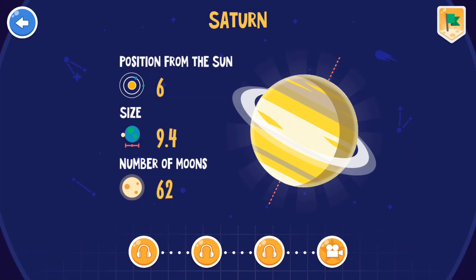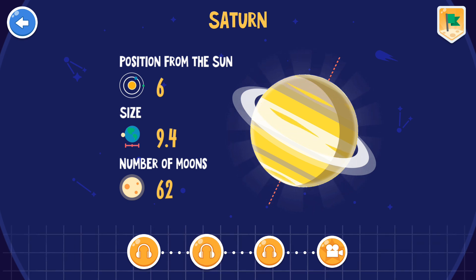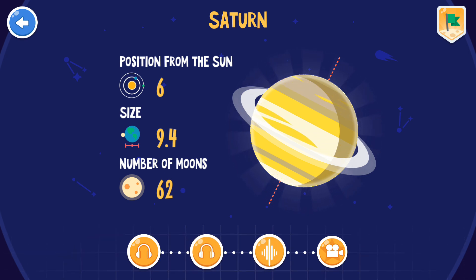There is a gigantic cloud hexagon on the northern pole of Saturn. The biggest moon of Saturn is Titan. It's the only moon in the solar system that has atmosphere. The Saturn rings are mostly made of ice particles.